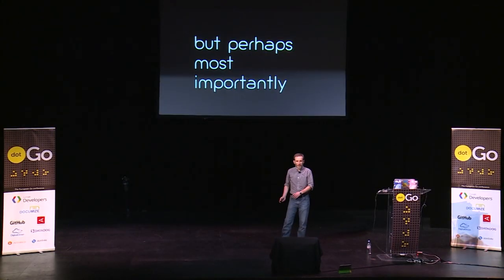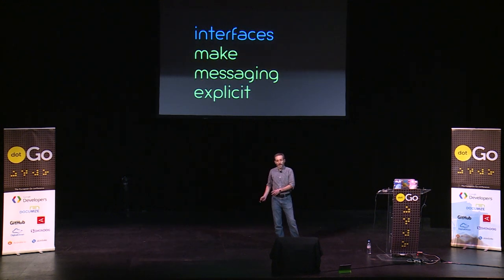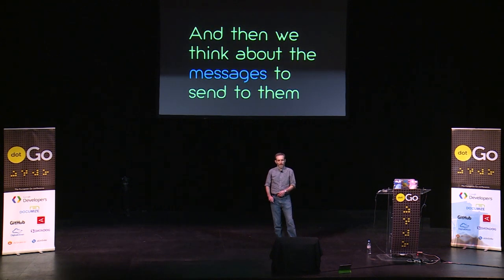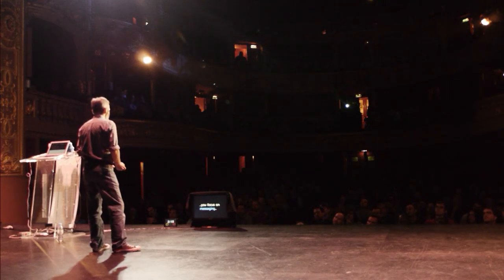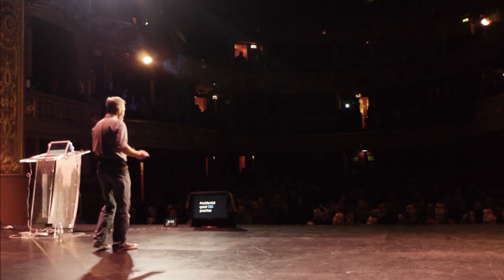But perhaps most importantly, Go supports messaging as a first-class concern. In Go, interfaces make our messaging explicit. We create types, and then we think about the messages we want to send to them. Go makes interfaces easy, so you focus on interfaces — that is, you focus on messaging without really noticing. It's a kind of accidental good OO practice. Isn't that nice? Thanks, Go.